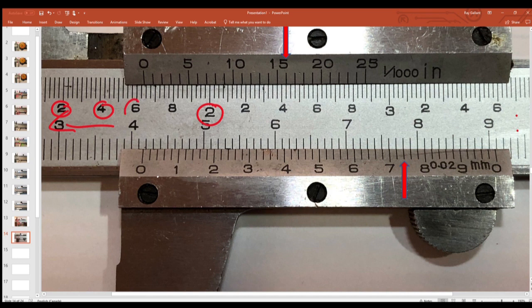Each one of these lines here represents 25 thou. So 0.025, and then according to our little stick here, we are at this number here, which is 16. So 0.016.